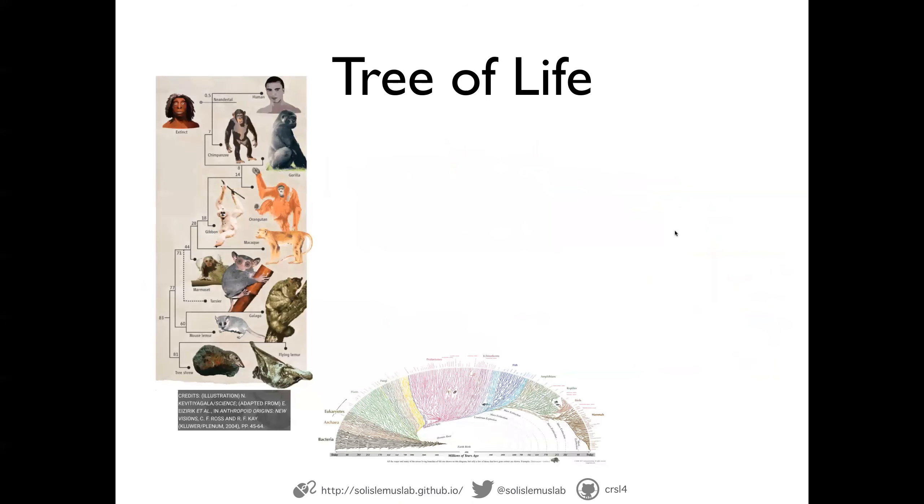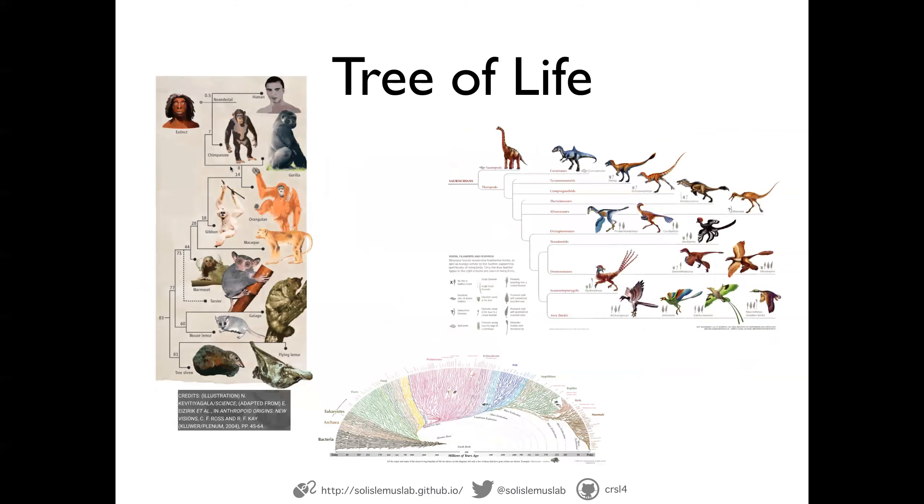So with the tree of life is that we know that humans, for example, are closely related to chimpanzees or the chimpanzees are the organism or the species most closely related to humans. It is also with the tree of life that we know that dinosaurs and modern birds are closely related.